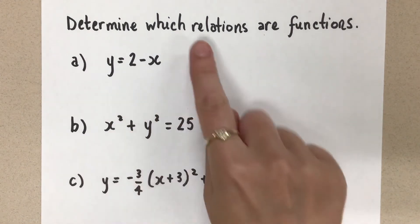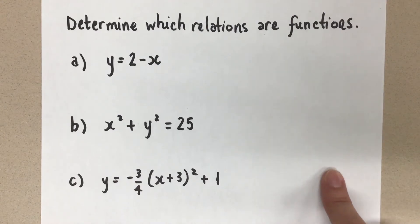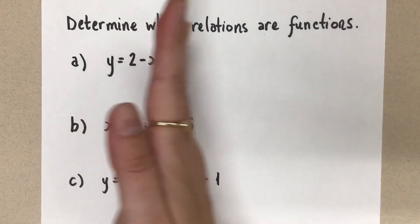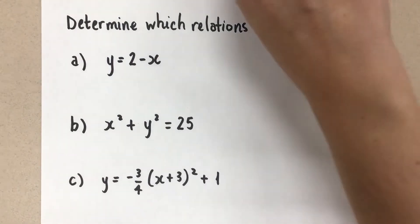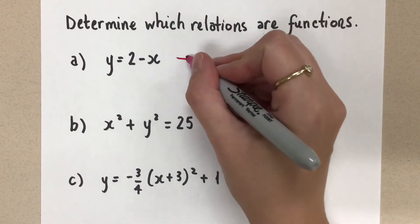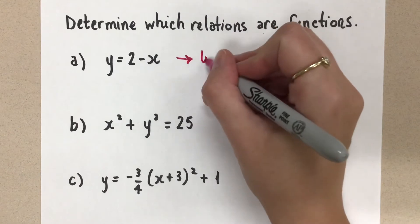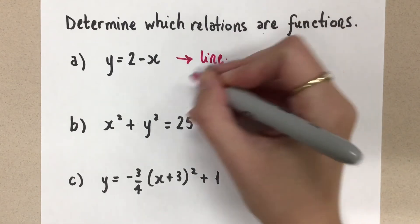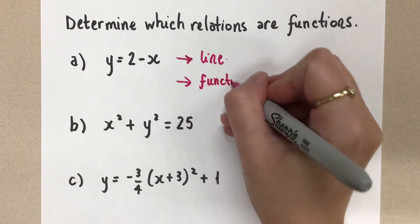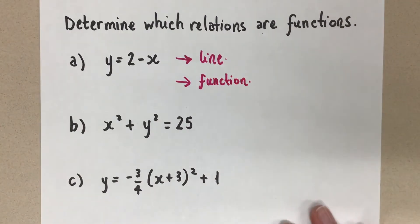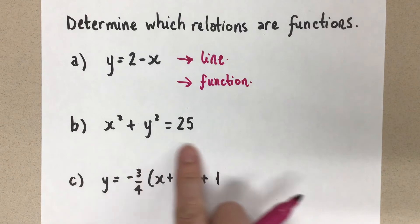So for this line, it's going to sort of go like this on the graph because of that negative slope. And so wherever I look at that line, it's going to pass the vertical line test. So we can say that because this is a linear relation, this is a line on the graph, then we know that it is a function. And that's it. So let's look at the next equation that we have here.